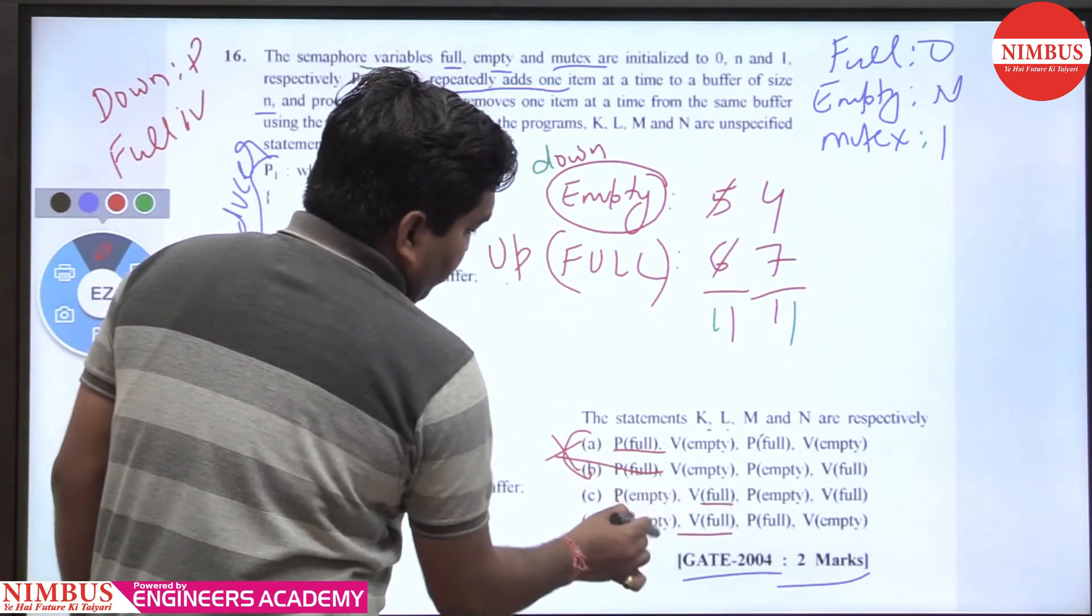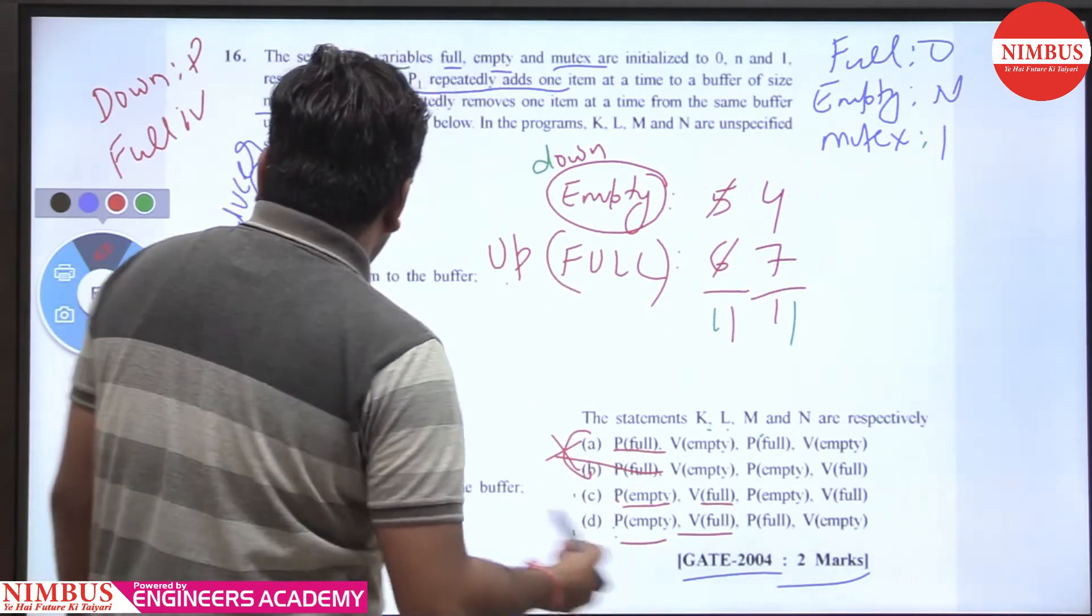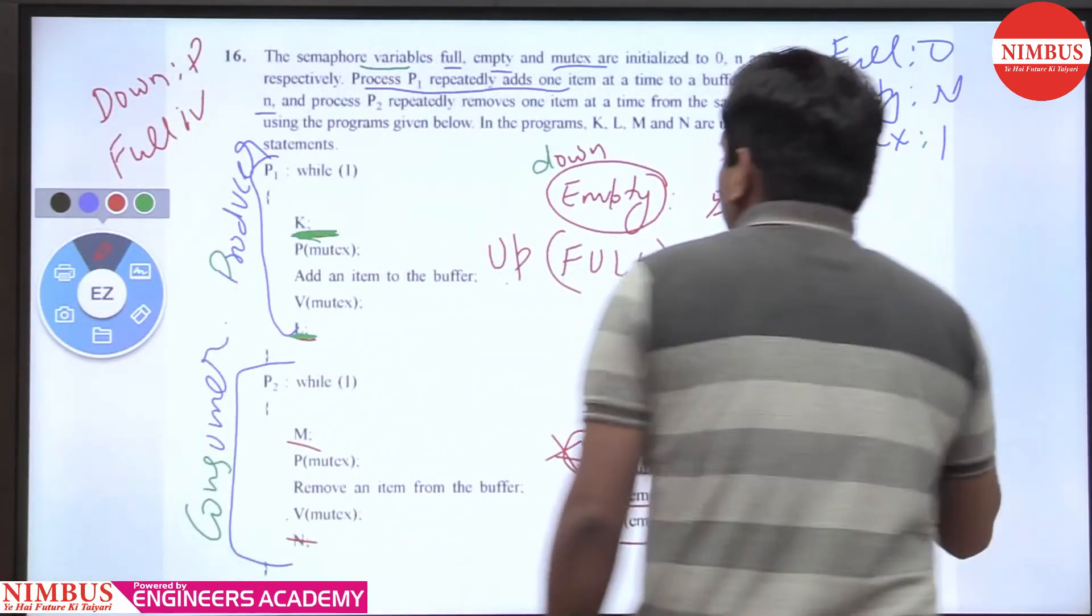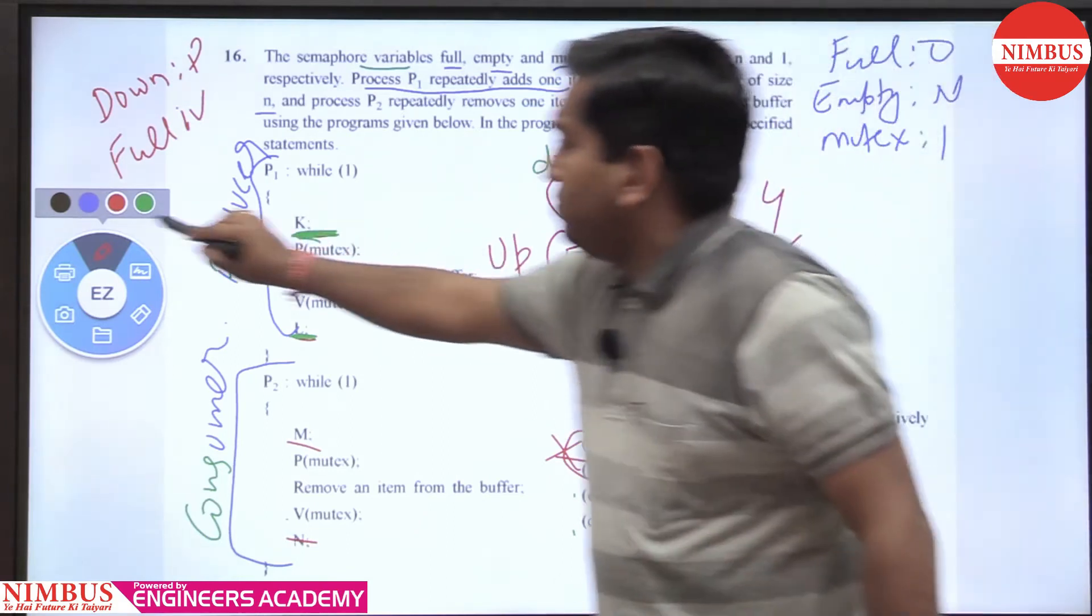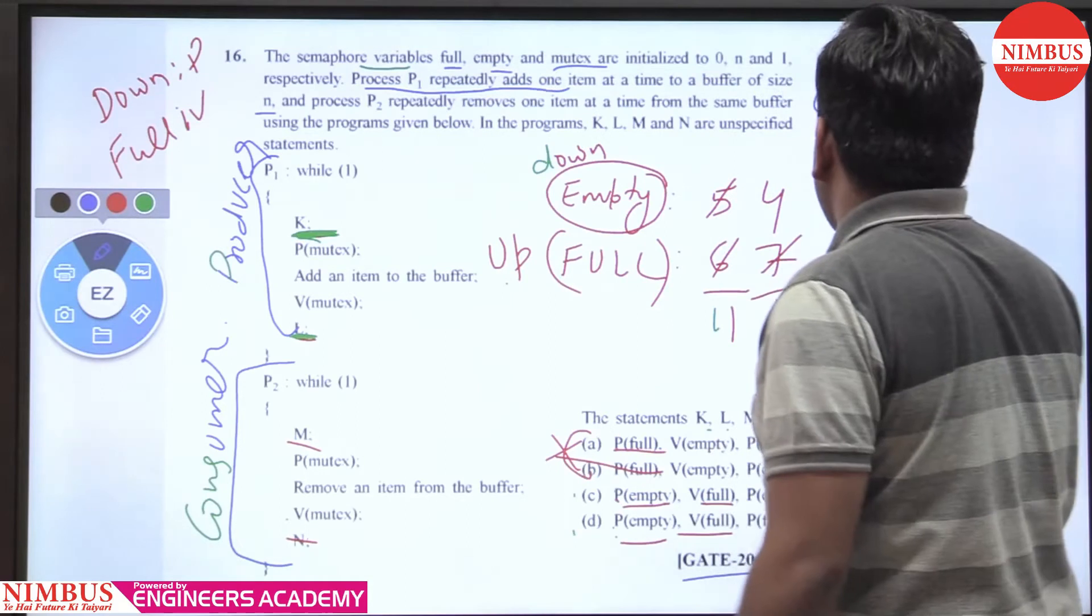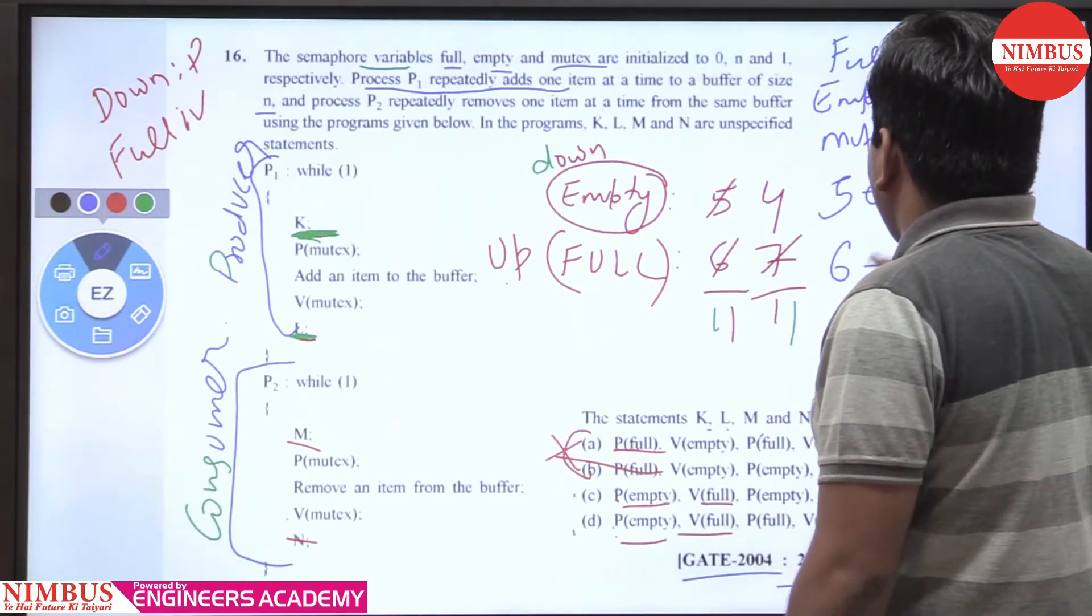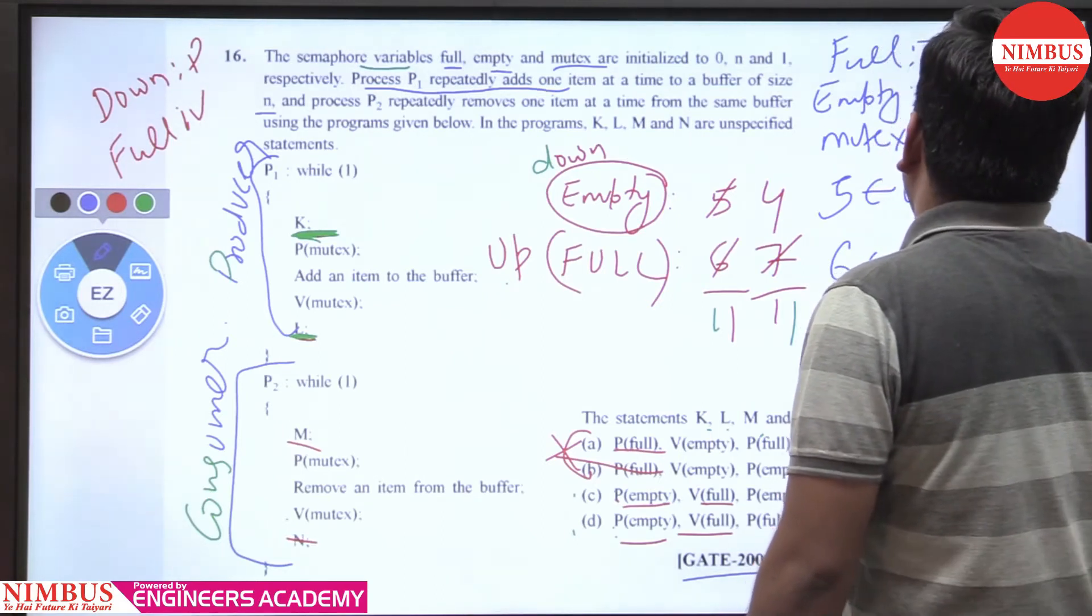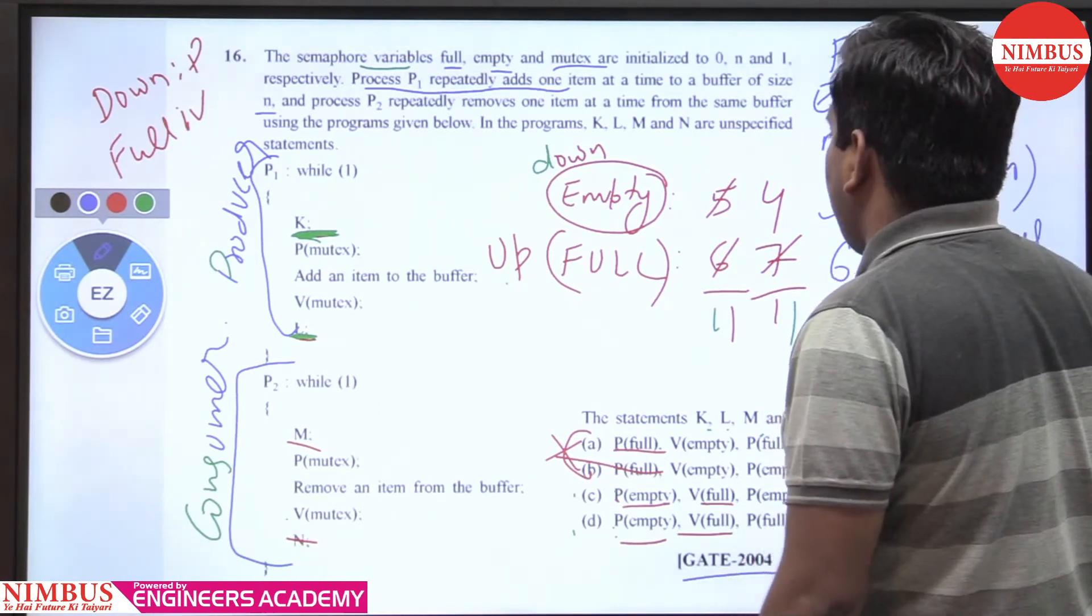Now when the consumer comes, it will consume. Consuming means full will decrease from 7 to 6, and empty will increase - up the empty and down the full.